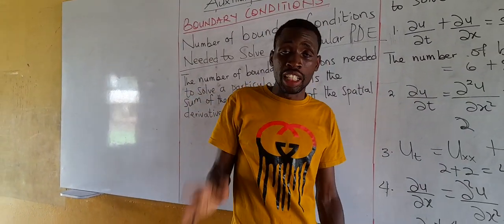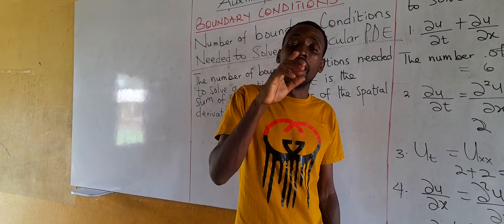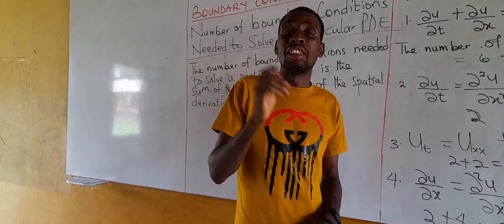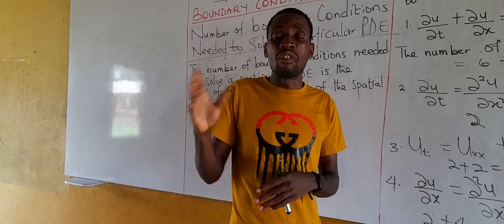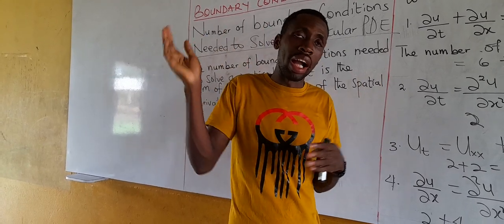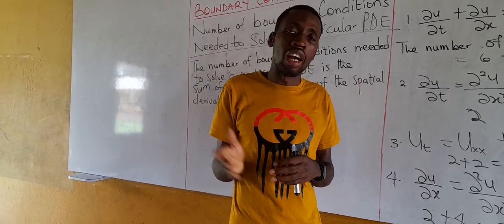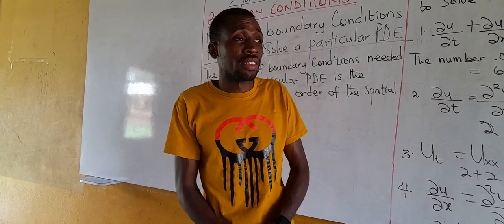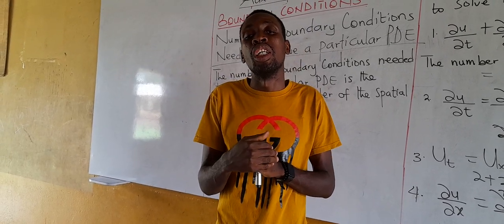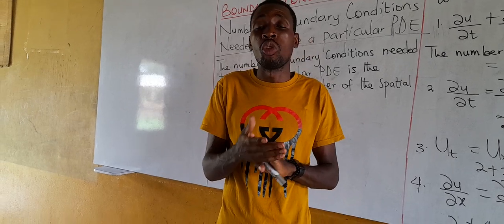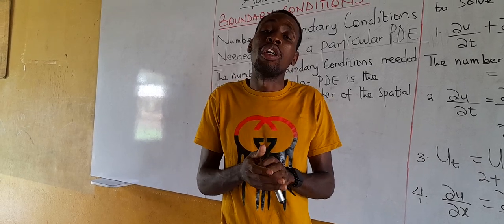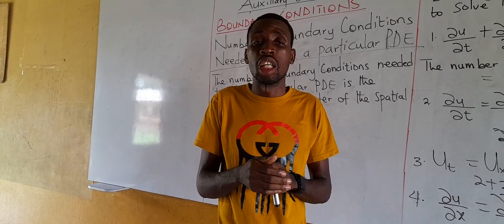Remember: when talking about initial conditions, our attention is on the time variable T. When talking about boundary conditions, our attention is on the spatial variables such as x, y, z — any variable that is not time. I'll end here today. Please subscribe to my YouTube channel, click the notification bell, and leave your comments — they keep me going. Until we meet again on partial differential equations, bye.